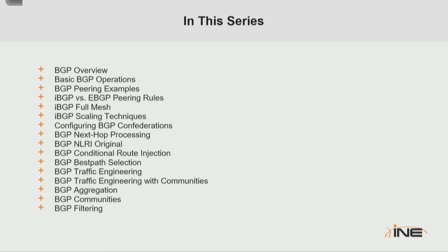We talk about BGP next-hop processing and how IGP interacts with BGP. We look at BGP network layer reachability information origination, or how do we advertise networks in BGP. We look at BGP conditional route injection, BGP best path selection, how do we traffic engineer by changing the best path selection with attributes and also with communities.